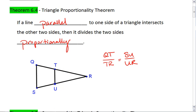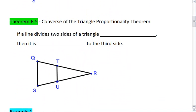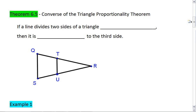Let's look at an example, or we can look at the converse first. The converse of the triangle proportionality theorem tells us that if a line divides two sides of a triangle proportionally, then it is parallel to the third side.